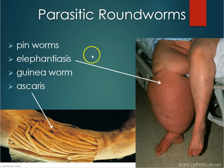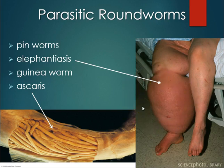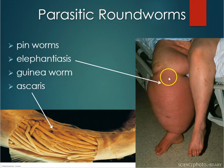Elephantiasis is caused by a roundworm that infects the lymph glands. The lymph nodes normally remove waste from the body — your immune system works there, filtering bacteria and viruses. This worm blocks the lymph glands, causing fluid to build up. Most of the swelling you see is fluid that backs up because the lymph glands are blocked, not worm tissue itself.